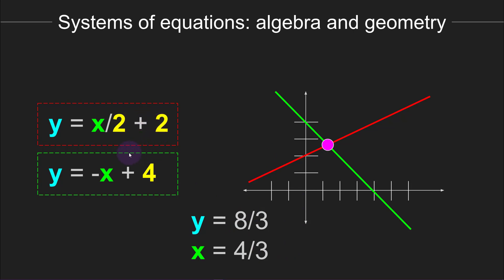Here are two complementary pictures of a solution to a system of equations: algebraically the solution is a pair of numbers that makes both equations true; geometrically the solution is the point where the two lines intersect. Now there's something interesting you can do with a system of equations: you can add multiples of one equation to the other and the solution remains the same. For a quick demonstration, I'm going to add two times the first equation to the second equation.